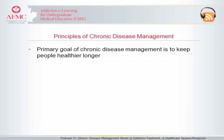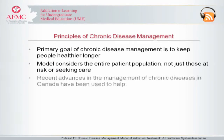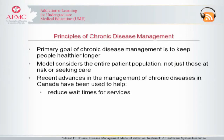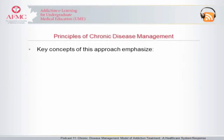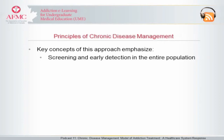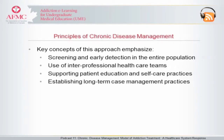The primary goal of chronic disease management is to keep people healthier longer. This model considers the entire patient population, not just those at risk or seeking care. Recent advances in the management of chronic diseases in Canada have been used to help reduce wait times for services, reduce health care resource utilization, and improve overall patient health. The key concepts emphasize screening and early detection in the entire population, use of interprofessional health care teams, supporting patient education and self-care practices, and establishing long-term case management practices.